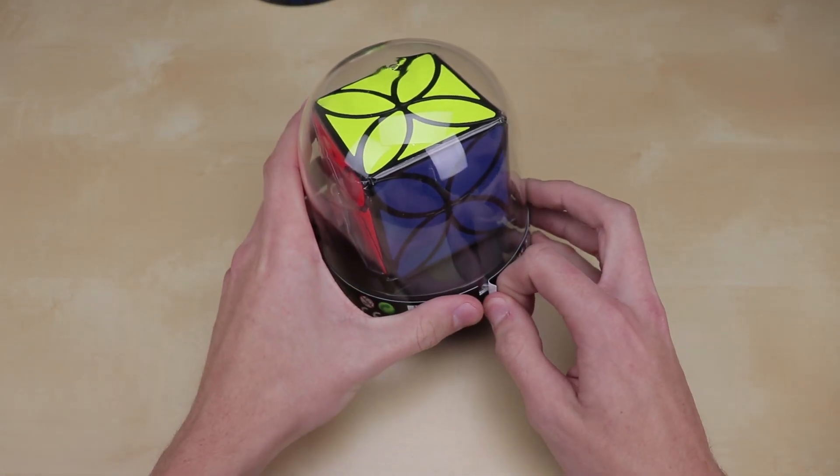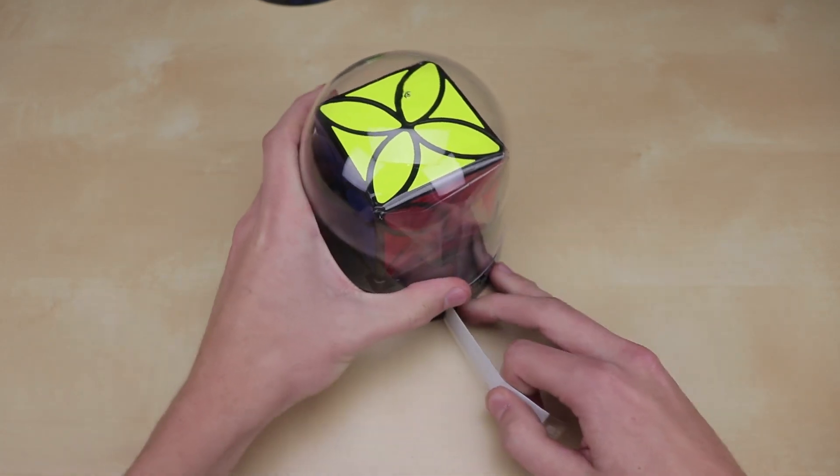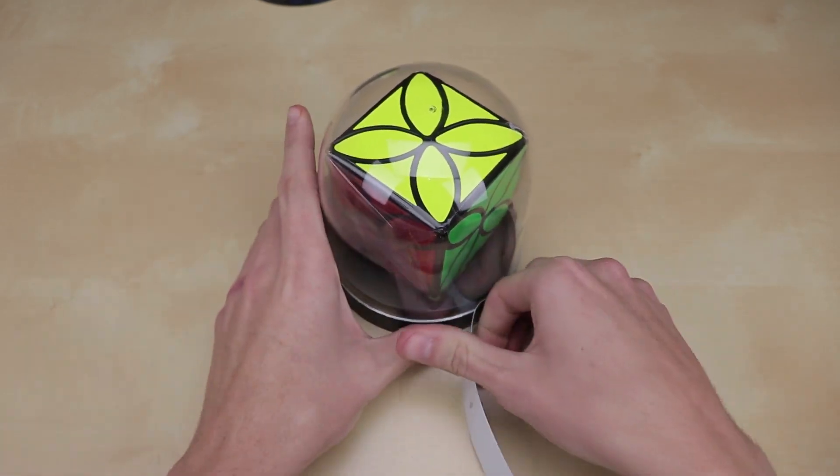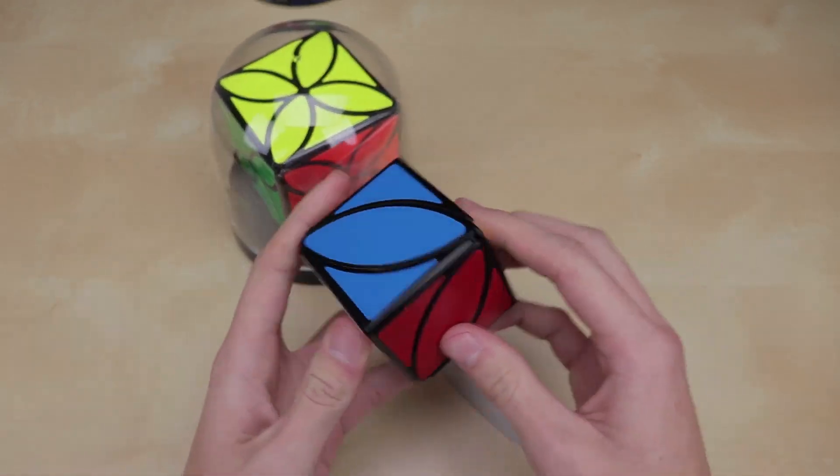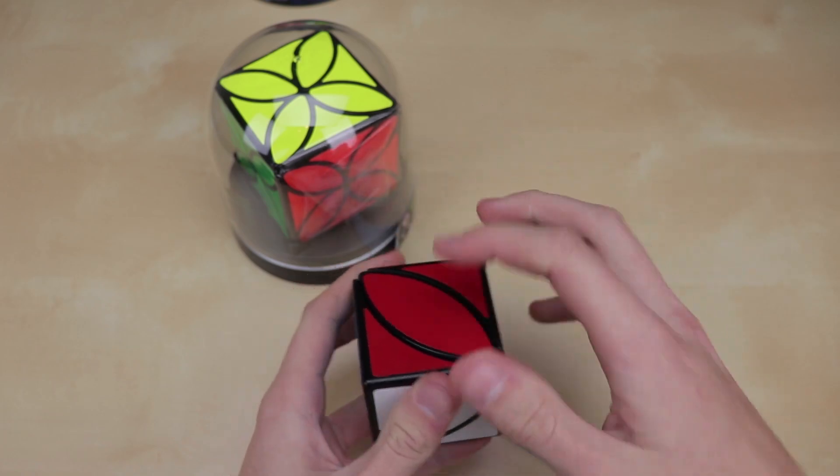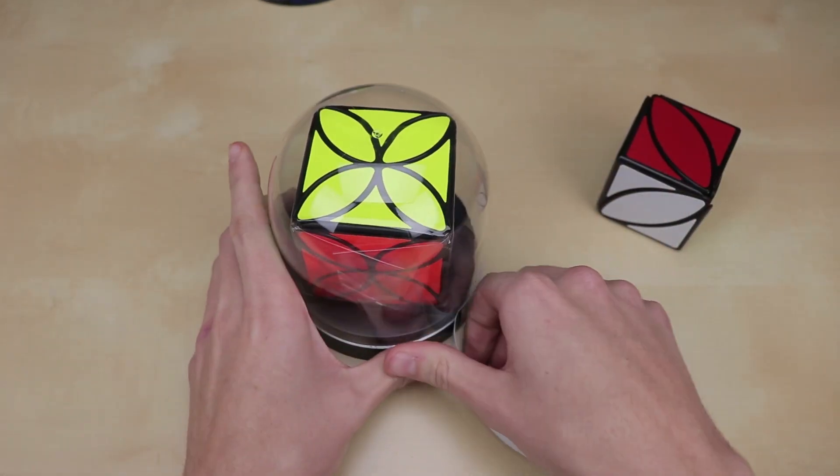And so basically this one is, I believe, an edge-turning puzzle that has these cool clover shapes on it. It actually looks pretty similar in terms of shape to the Ivy Cube. The shapes of these pieces look very similar to the shapes on this.